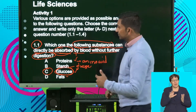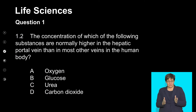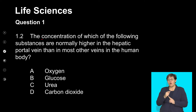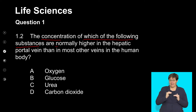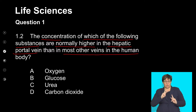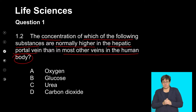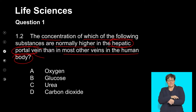One more question before we have a break. The question reads: the concentration of which of the following substances is normally higher in the hepatic portal vein than in most other veins in the human body? The hepatic portal vein refers to the vein that is coming from the liver.